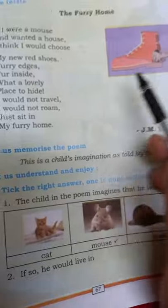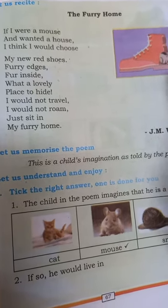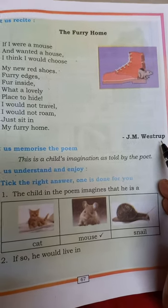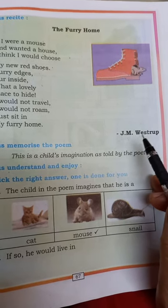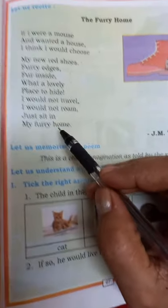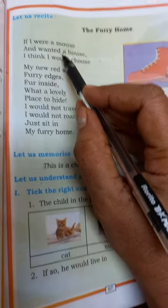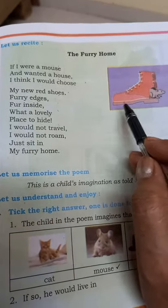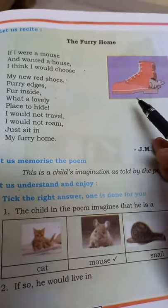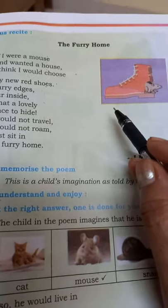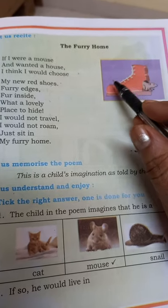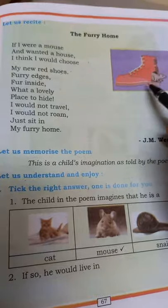Children, you can look at this mouse. This poem is written by J.M. Westrap. This poet's imagination — the poet is telling about a child's imagination. A child is imagining itself as a mouse. So the child is saying: if I were a mouse and wanted a house — everybody needs a house, isn't it children, we all need a house to live in — so he would choose his new red shoes.